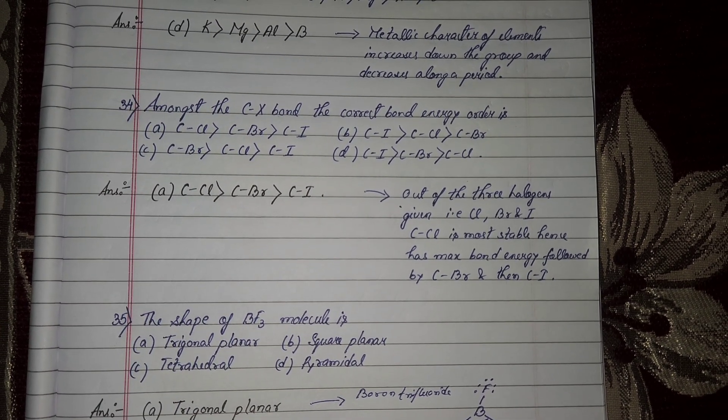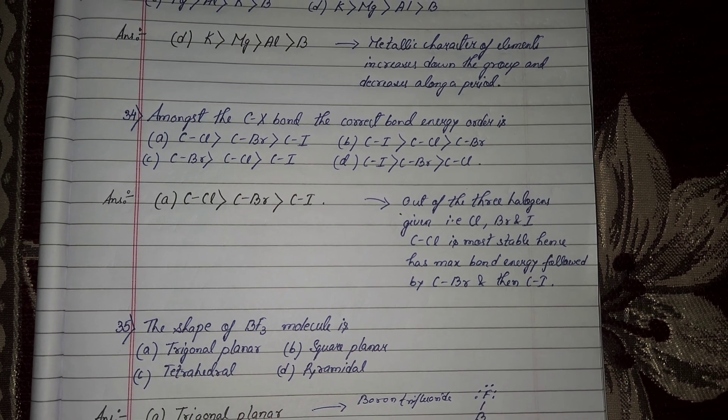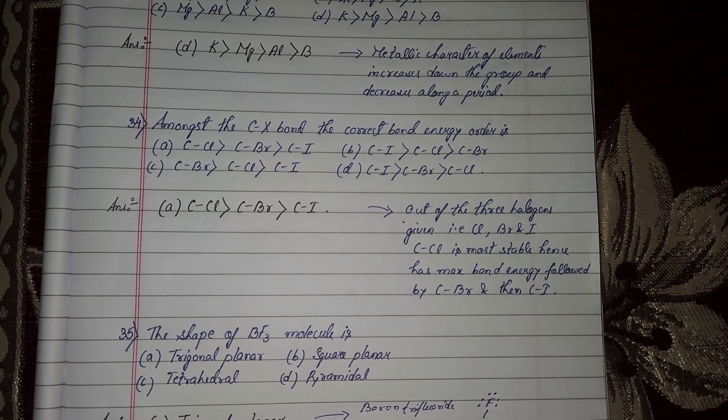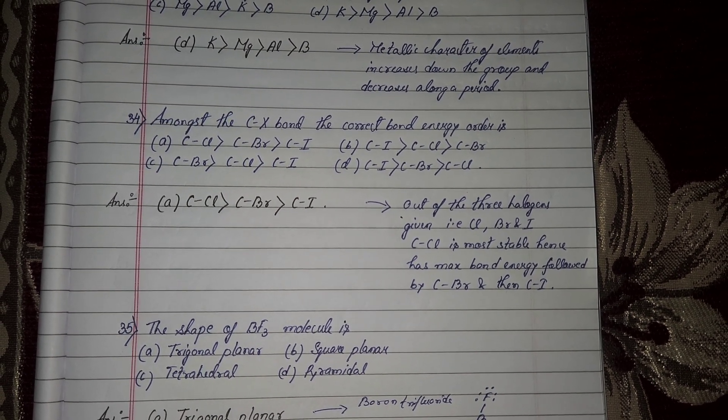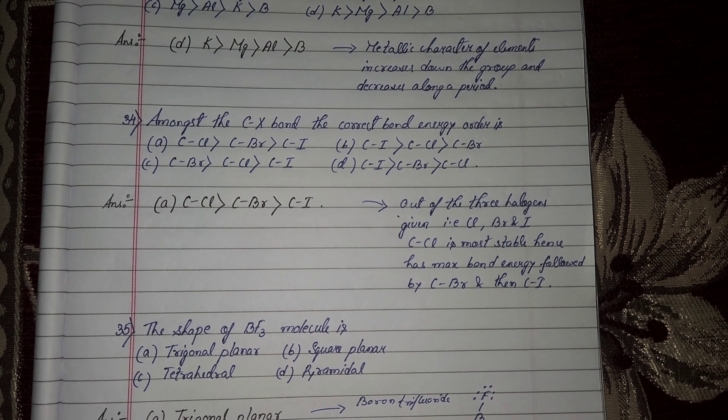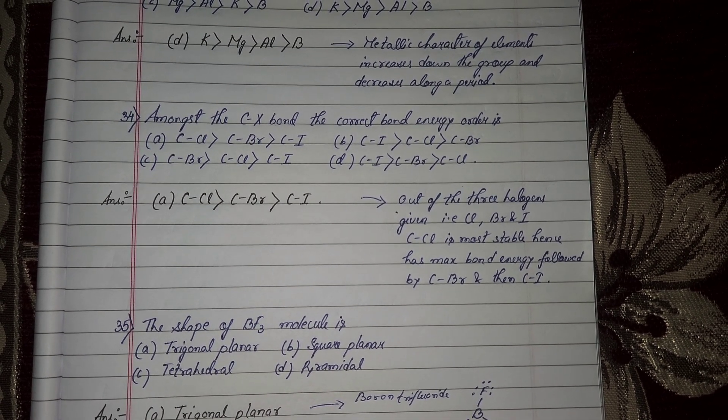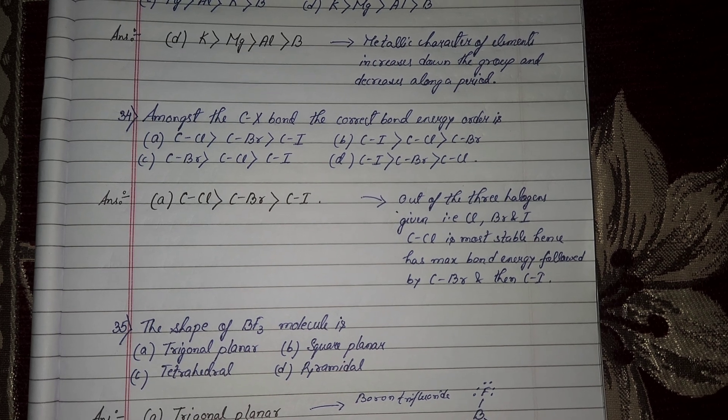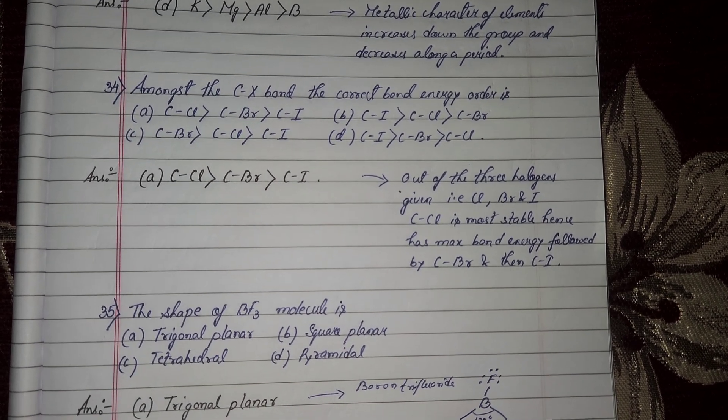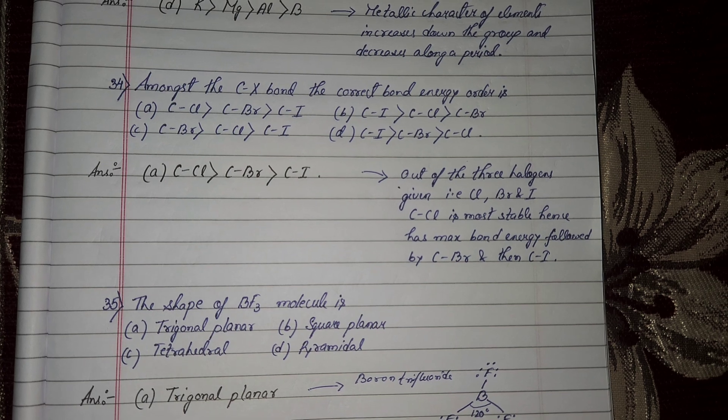Halogen atoms chlorine, bromine, iodine, carbon chlorine is most stable because bond energy is maximum. Carbon chlorine is greater, then carbon bromine, then carbon iodine. If fluorine was there, carbon fluorine would be greater.